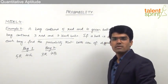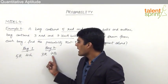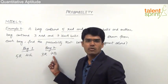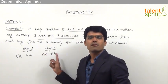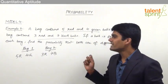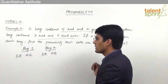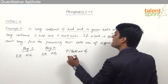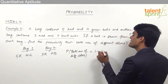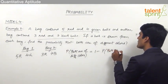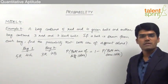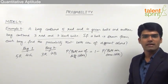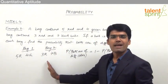If we want both balls to be of different colors, the possible cases are: red from bag 1 and black from bag 2, or green from bag 1 and red from bag 2, or green from bag 1 and black from bag 2. Instead of taking these three cases, we can take this as 1 minus probability that both balls are of the same color, since total probability is always 1.